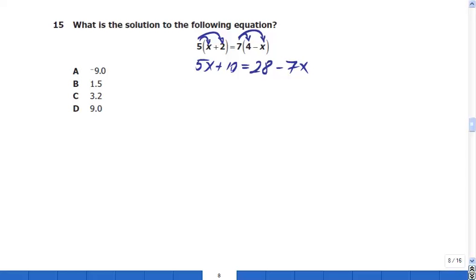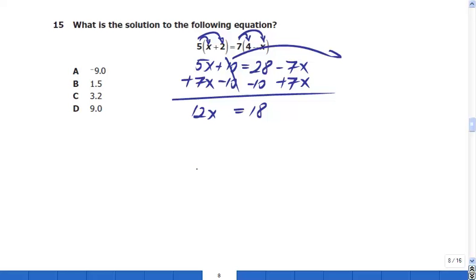Put your x's on the left side, which means add 7x to both sides. Take this 10 on the other side by subtracting 10 from both sides. 5x plus 7x will be 12x, 10 minus 10 is 0, equals 28 minus 10, which is going to be 18.